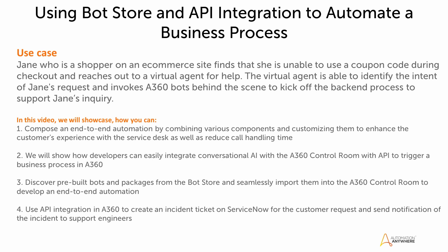The use case is this: Jane, who is a shopper on an eCommerce site, finds that she is unable to use a coupon code during checkout and reaches out to a virtual agent for help. The virtual agent is able to identify the intent of Jane's request and invokes Automation 360 bots behind the scenes to kick off the backend process to support Jane's inquiry. In this video, we will showcase how you can compose an end-to-end automation by combining various components and customizing it to enhance the customer's experience with a service desk as well as reduce call handling time.